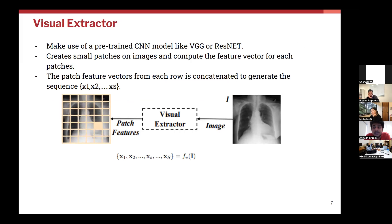The first component is the visual extractor — a basic CNN feature extraction module. Given an image, you extract image features from it. One notable difference is that you use patches: you extract features for individual patches rather than for the whole image. The features of the patches are concatenated row-wise to get different sequences x1, x2, ..., xls. That is the output from the visual extractor.